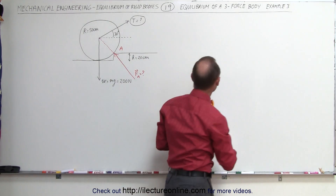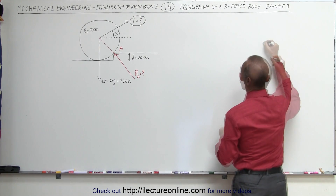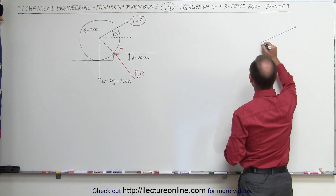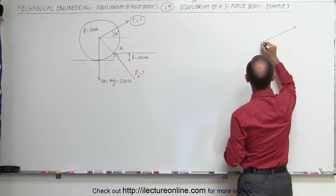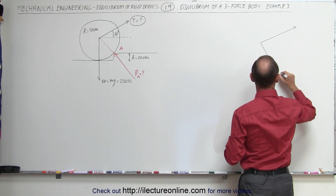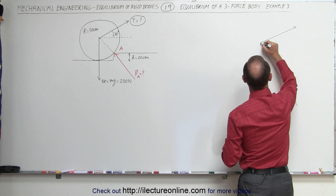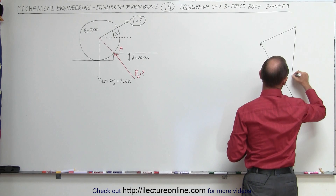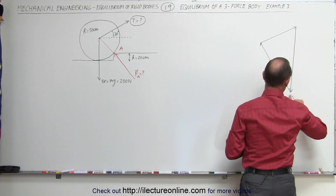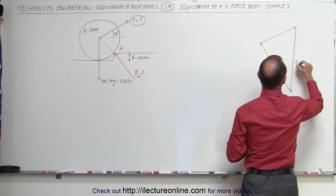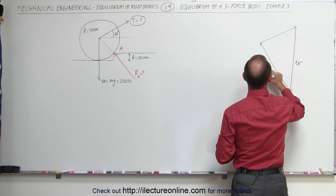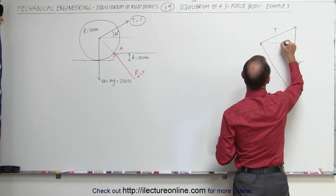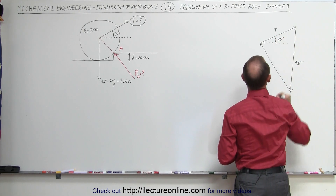So let's go ahead and graph those three forces into a triangle. Here we have the tension, here we have the force acting on A, and here we have the weight of the wheel. This is the weight, this is the force at A, and this is the tension. The tension makes an angle of 30 degrees with the horizontal.